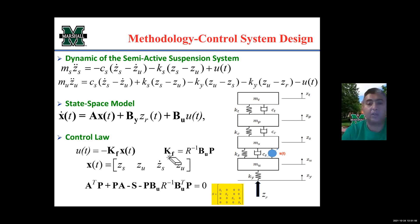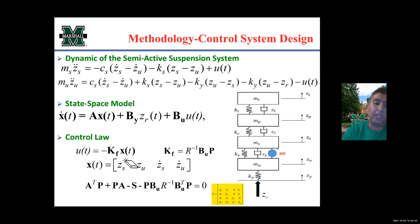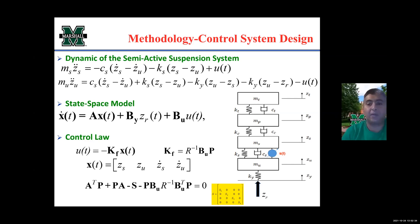In the Linear Quadratic Regulator, the optimal gain KF is given by the equation R-inverse times BU multiplied by P. P is found by solving the algebraic Riccati equation, which is a function of S — the state weighting matrix — and R, the control weighting matrix. KF, the control gain, is therefore a function of R and S. Since we have a four-by-four system, S has four scalars on the diagonal, each weighting the importance of one state. R along with these four scalars will be chosen as design parameters, in addition to KS, CS, and KY.